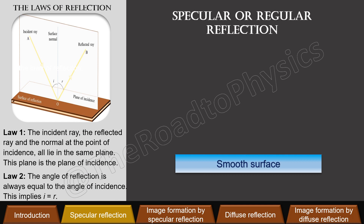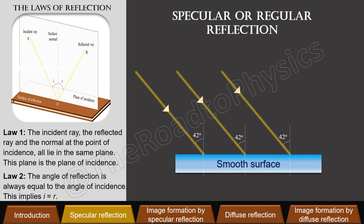Now the question arises: why does a parallel beam of light falling on a smooth surface result in a parallel beam of light? The answer lies in the second law of reflection. In reflection from a smooth surface, all the surface normals are parallel. So if a parallel beam of light is incident on such a surface, the angle of incidence will be the same for all rays. According to the second law of reflection, the angle of reflection is the same as the angle of incidence. This is why the reflected rays are parallel to each other.